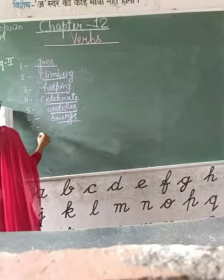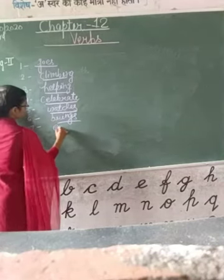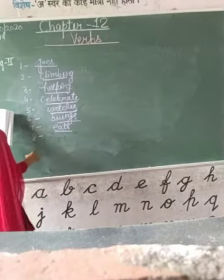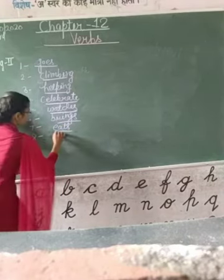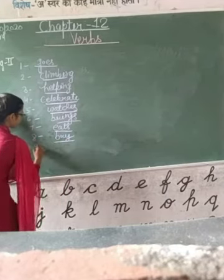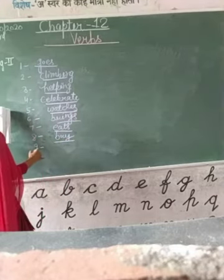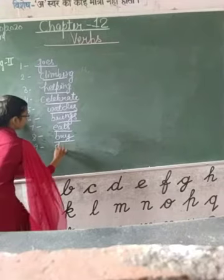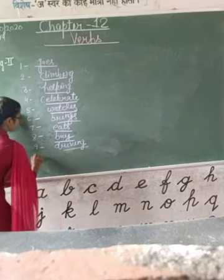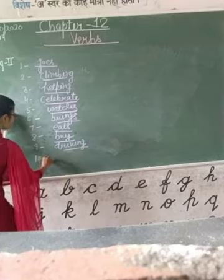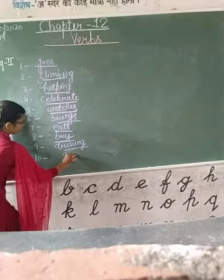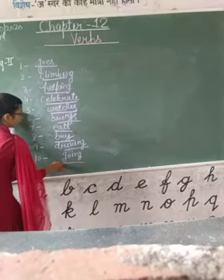Seven: everyone gives lunch — we will underline it. Eighth: we buy fresh vegetables — we will underline it. Ninth: we are driving to the chapel — we will underline 'driving'. Tenth and last one: we are going to the party — we will underline 'going'.